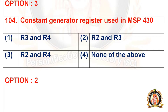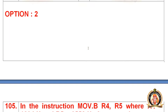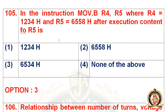Question 104: The constant generator register used in MSP430 is. The options are R3 and R4, R2 and R3, R2 and R4, and none of the above. The right option for question 104 is the second option, that is R2 and R3.